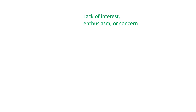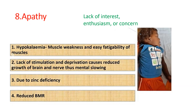Malnourished patients are prone to lack of interest, enthusiasm, or concern for their environment. This is due to hypokalemia, which causes muscle weakness and easy fatigability. Lack of stimulation and deprivation causes reduced brain growth and nervousness. Mental slowing leads to lack of interest in the environment. Zinc deficiency also causes apathy, and reduced basal metabolic rate predisposes to apathy.